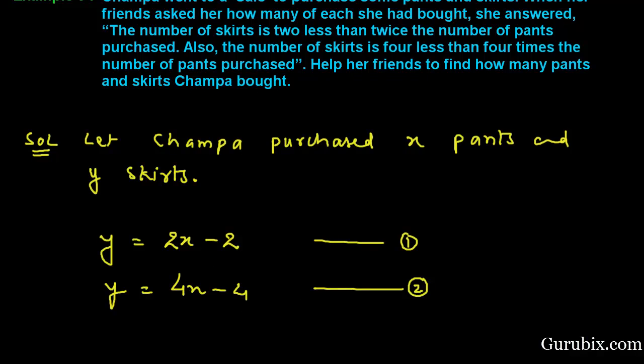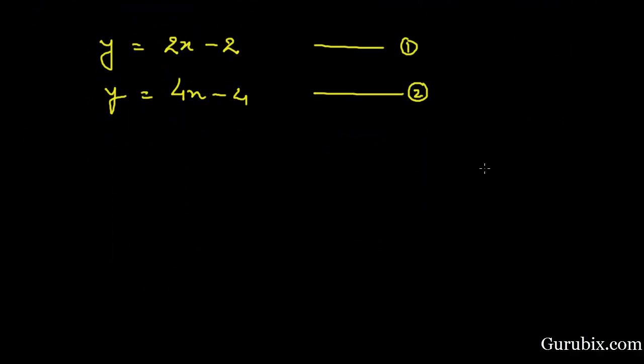And now we shall apply the elimination method to solve these equations for X and Y. And for that, we shall subtract equation number 1 from equation number 2. So, we shall write here subtracting equation number 2.